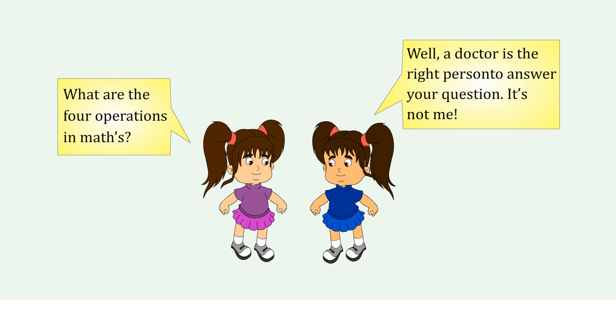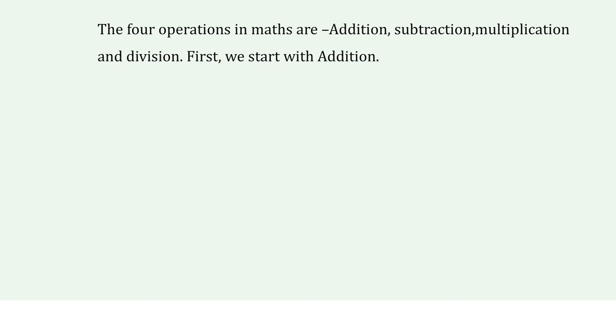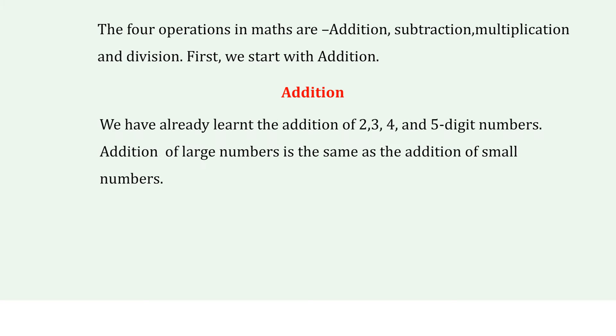Number two: operations with large numbers. Warm-up time — what are the four operations in maths? Learning time: the four operations in maths are addition, subtraction, multiplication, and division. First we start with addition. We have already learned the addition of 2, 3, 4, and 5 digit numbers. Addition of large numbers is the same as the addition of small numbers.